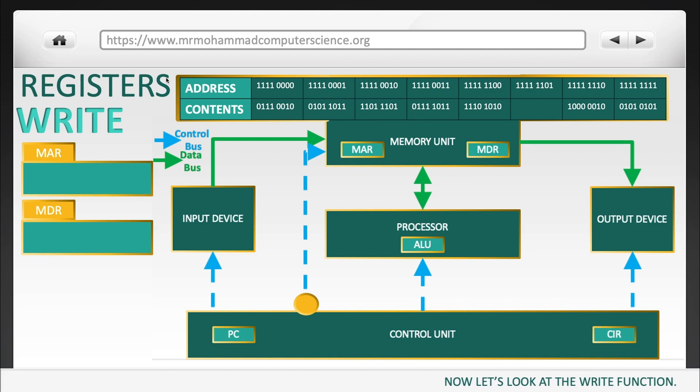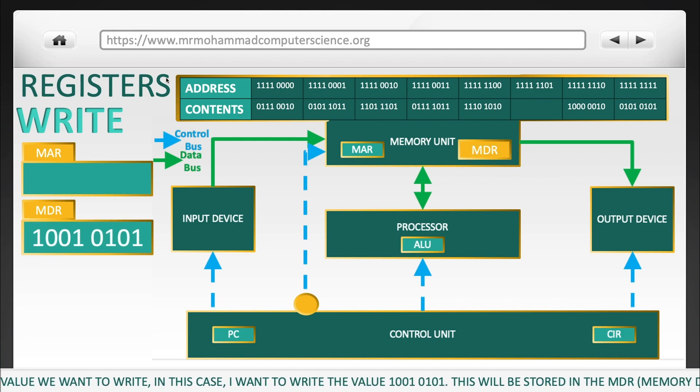Now, let's look at the WRITE function. First, we'll enter the value we want to write. In this case, I want to write the value 1001 0101. So I'm going to put that in the MDR.